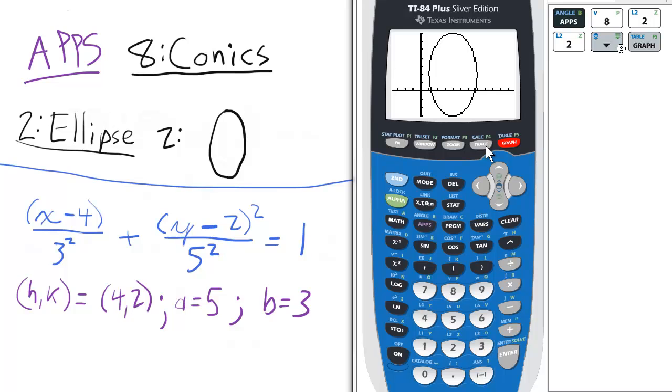Again, we can press trace. We start at the rightmost point on our ellipse, which is the point 7, 2.